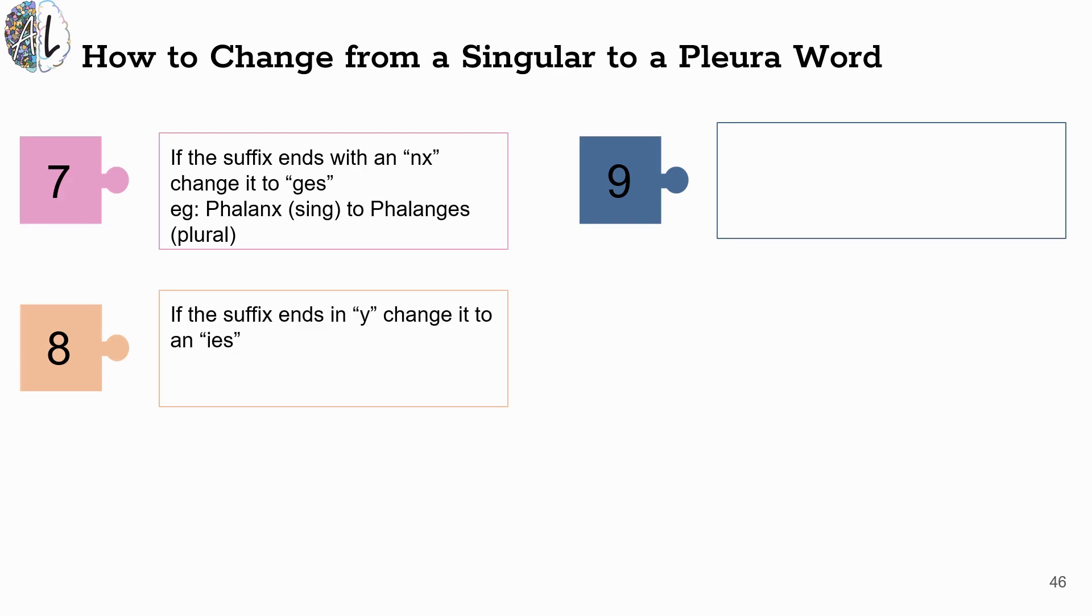If your suffix ends in a Y, you are going to change it to an IES set of lettering. The term cardiopathy is singular, but the term cardiopathies is a plural term referring to more than one.